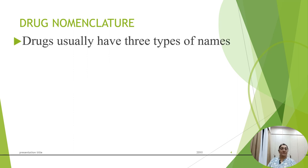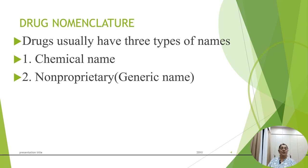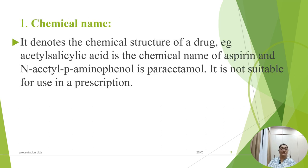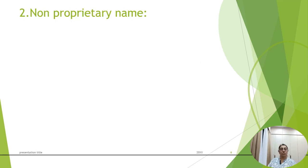Now, what is drug nomenclature? Any drug has three kinds of names. First is the chemical name, second is the non-proprietary name or generic name, and third is the proprietary name or brand name. The chemical name denotes the chemical structure of the drug — for example, acetylsalicylic acid is the chemical name of aspirin, and acetyl p-aminophenol is the chemical name of paracetamol. It is not suitable for use in prescriptions.